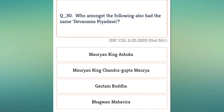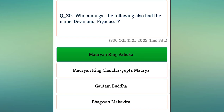Who among the following also had the name of Devanampiya? Ashoka was known by that name. There are 33 inscriptions of Ashoka.